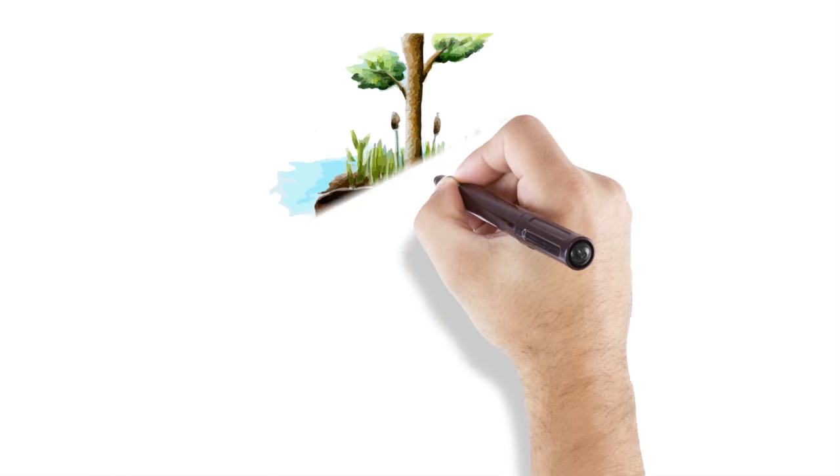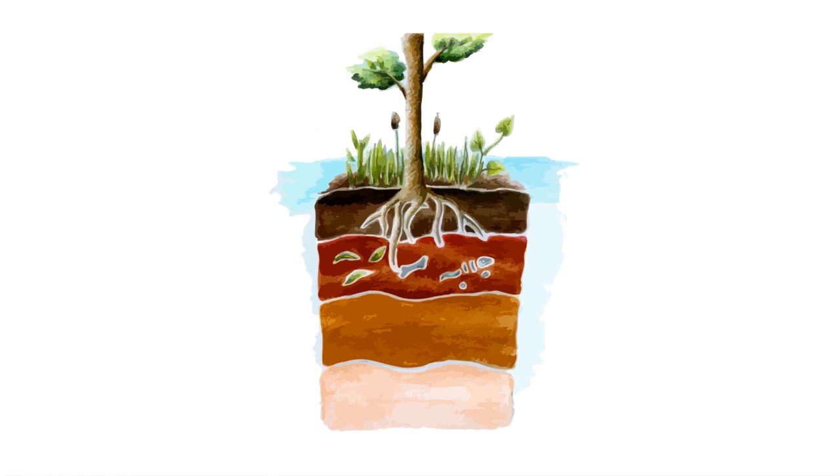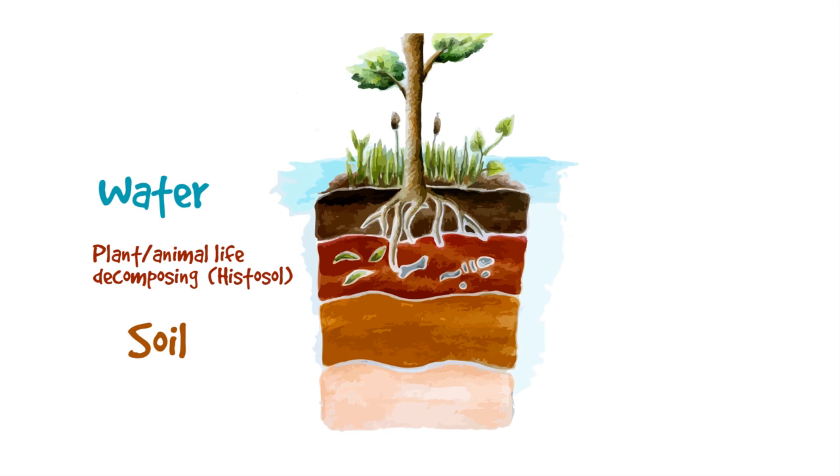Below the surface, wetlands play another role in mitigating climate change. With so much water present, organic material breaks down slowly in wetlands, forming peaty soils known as histosols. Histosols are important reservoirs of carbon stocks, keeping carbon dioxide in the ground rather than in the atmosphere.